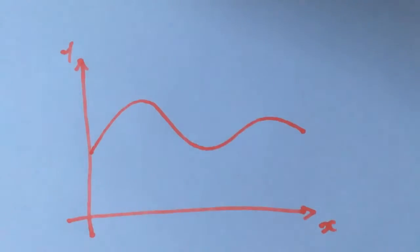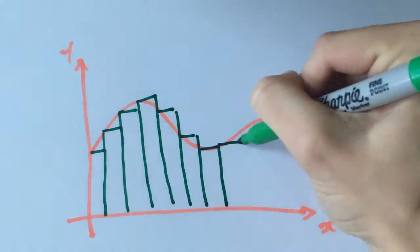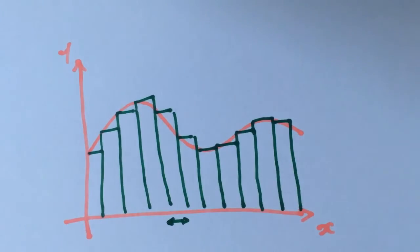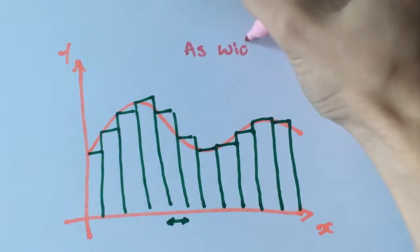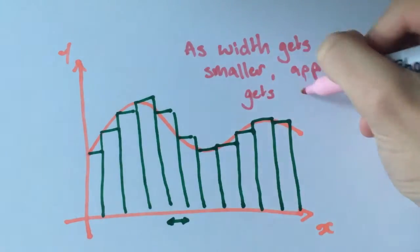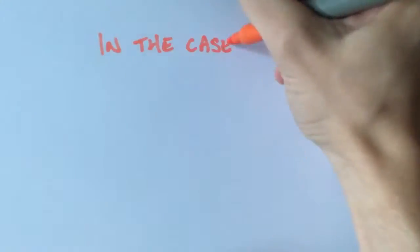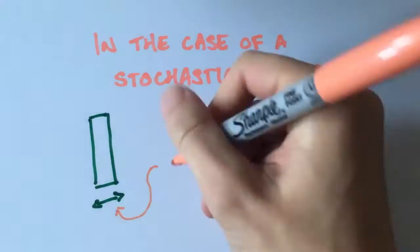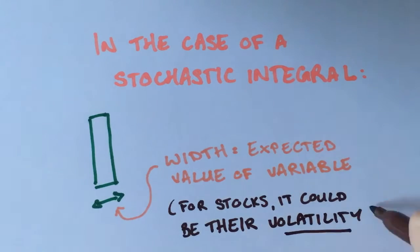In a similar way to the Riemann integral, where the area under a function is split into rectangles in order to calculate an approximation, a stochastic integral can be thought of as also using rectangles, but of width equal to the expected values of variables that affect the one being predicted, such as those used in the following example.